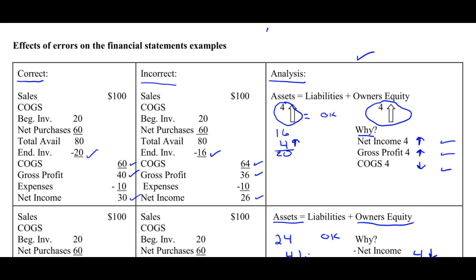It's much easier to say: if this is too big, then this is too big. And if that's too big, net income was too big because net income was closed into it. And what would make net income too big is cost of goods sold being too small. That's what happens if inventory is overstated. And I can do that again if it's understated.